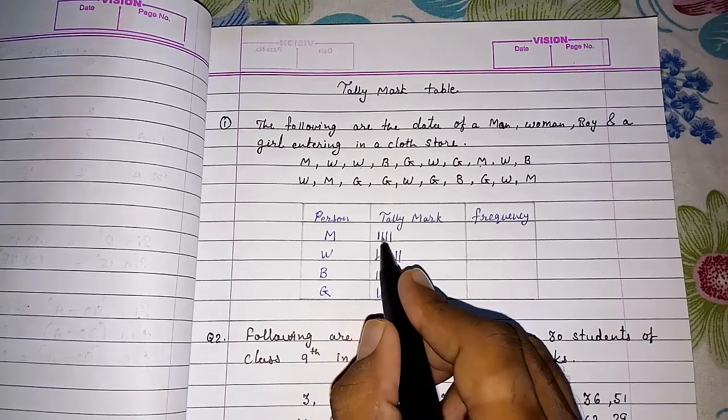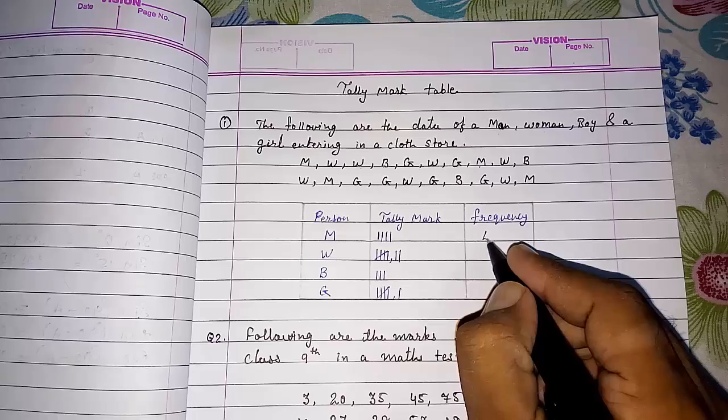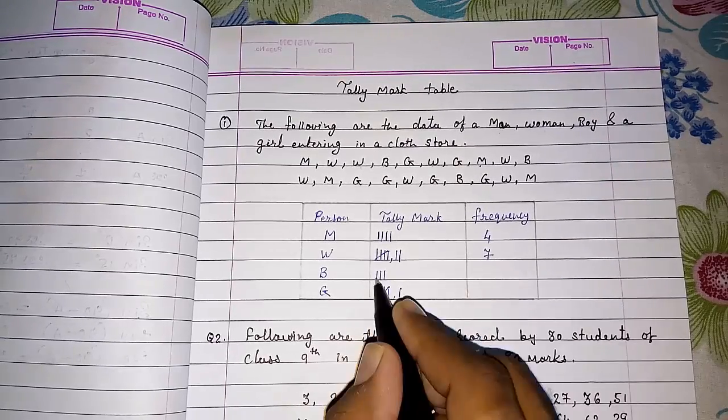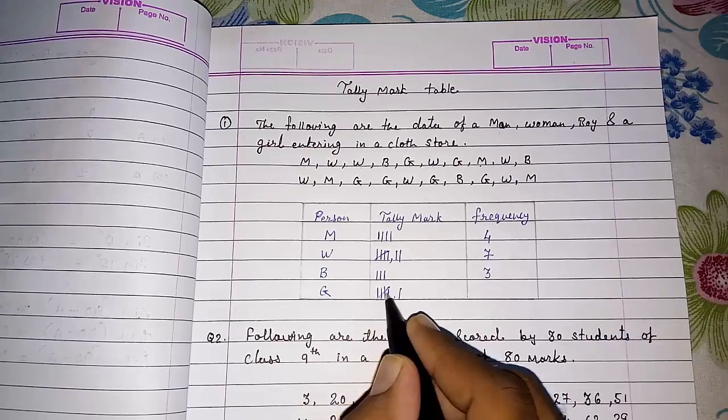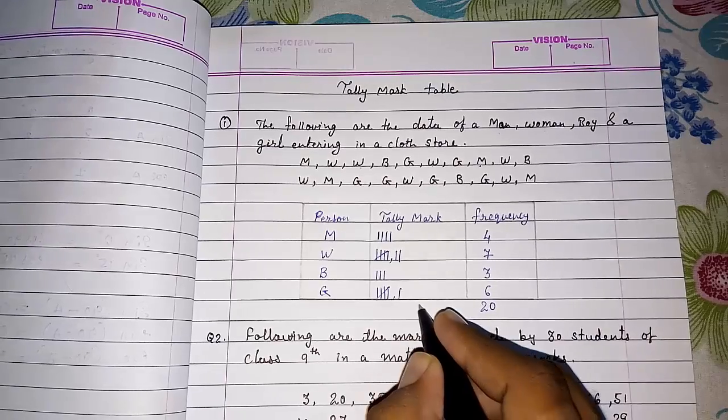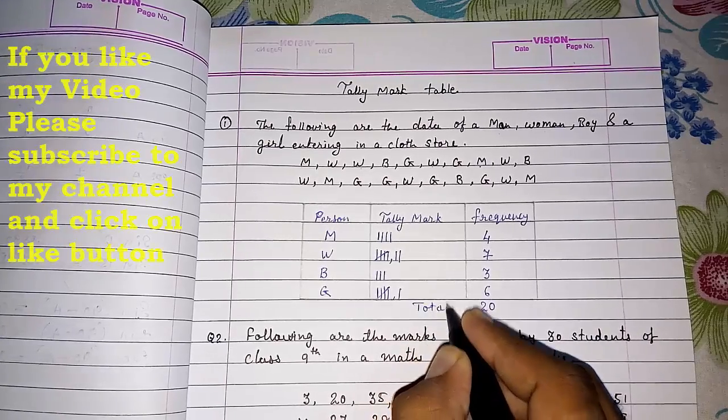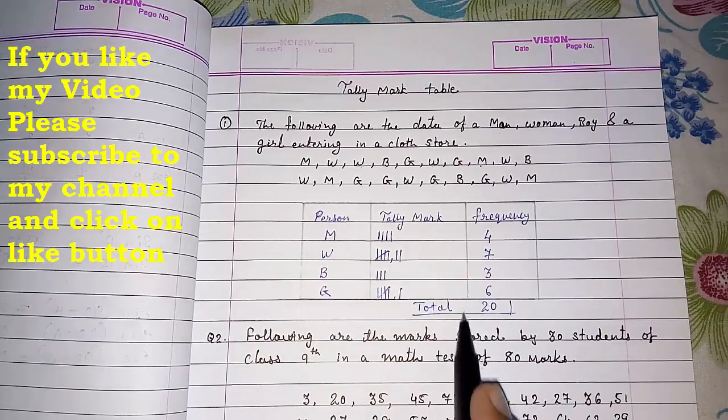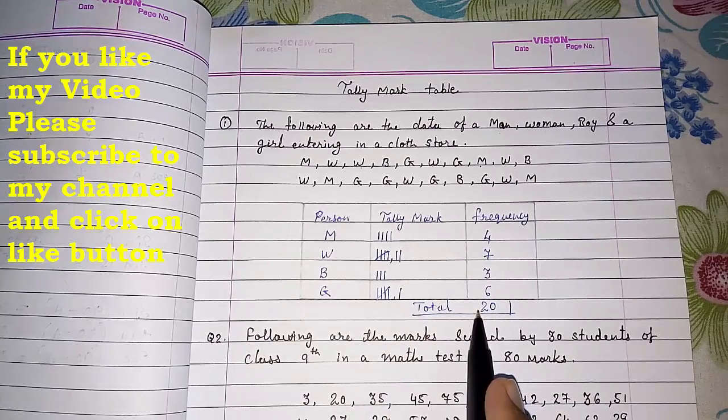Now count the total. One, two, three, four. So here it will come four. Five, six, seven - seven. Three. Five plus one - six. Now we have to do addition of this and this is twenty. Look here, the total should match with the number of observations. It was twenty, so here also our sum is coming twenty.